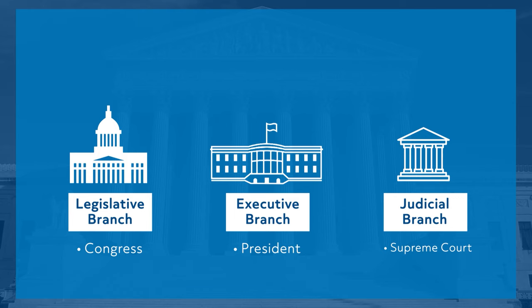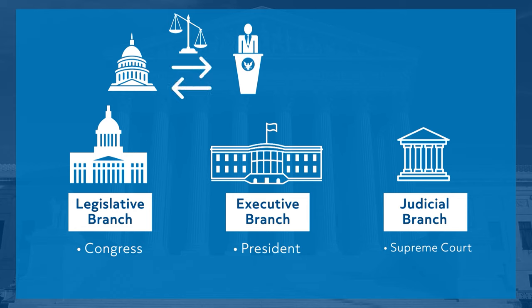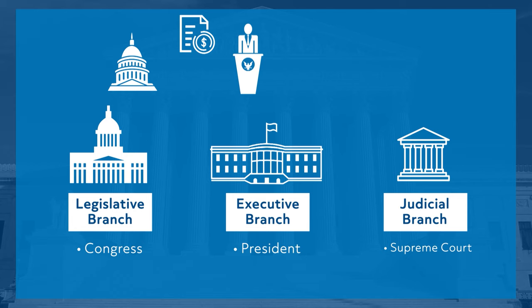Now let's dive into how Congress relates to other branches of our federal government — namely the executive branch, or office of the president, and the judicial branch, which includes the Supreme Court. The relationship between the president and Congress is often strained. Checks and balances frequently allow one of the two to check the other. The legislative branch basically holds the nation's purse strings, so while the president proposes a budget, Congress decides how much gets spent and where. The president can veto legislation, but Congress can override the president's veto with a two-thirds majority.